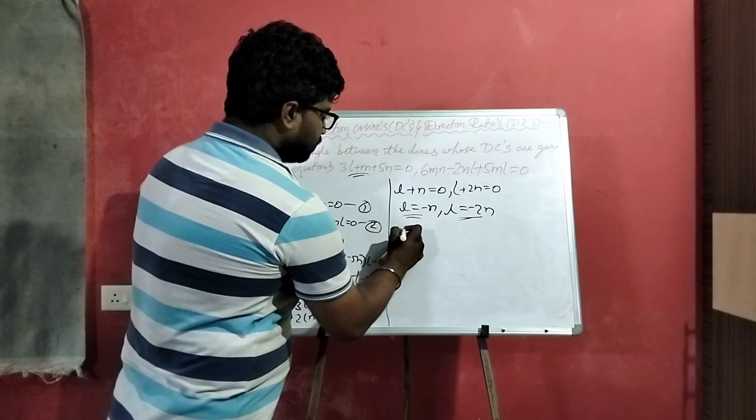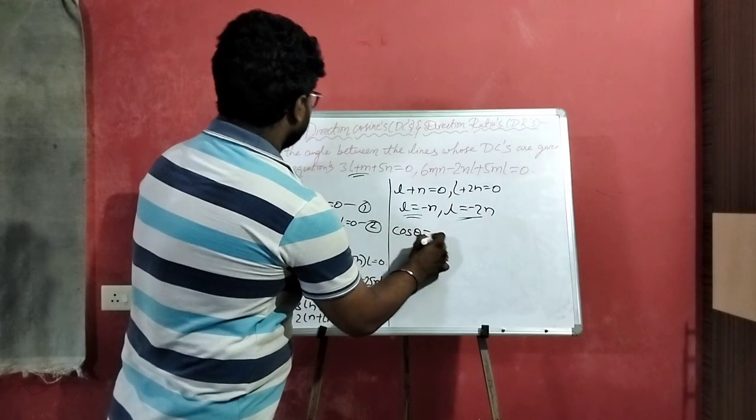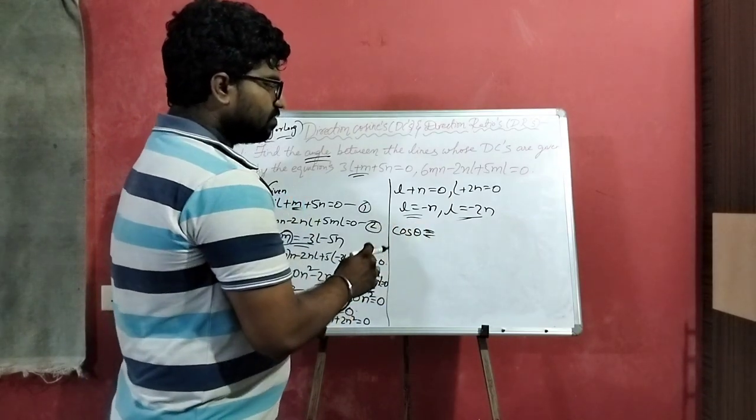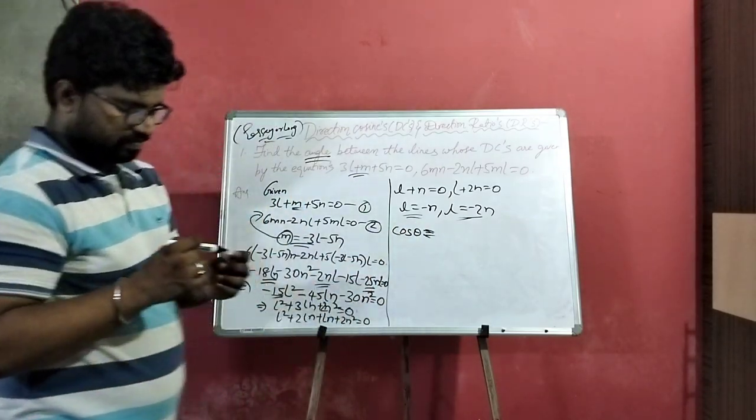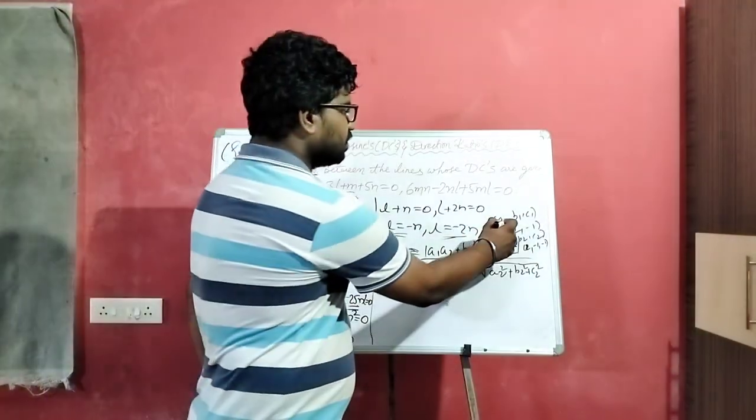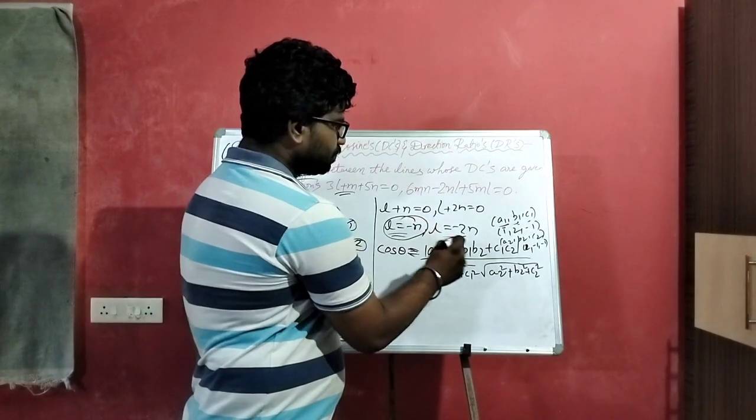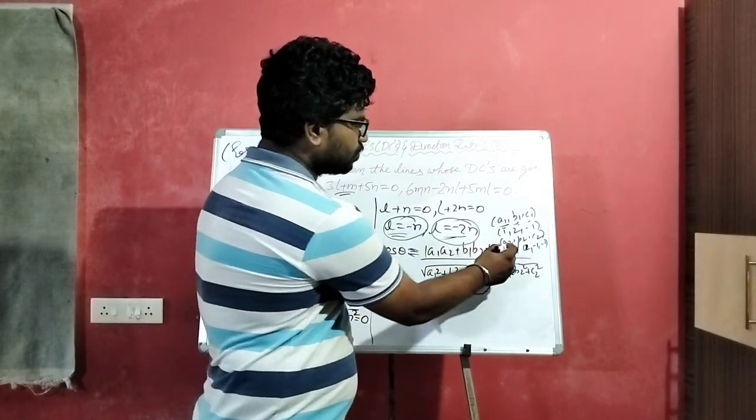To find the angle, find the cos theta value. Find a1, b1 and c1 for the first case.